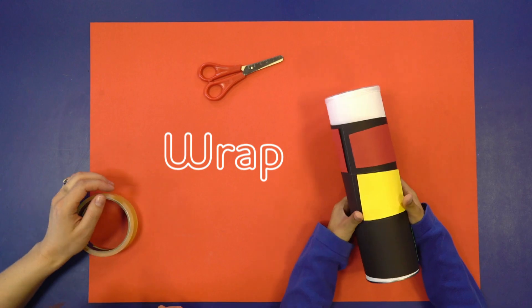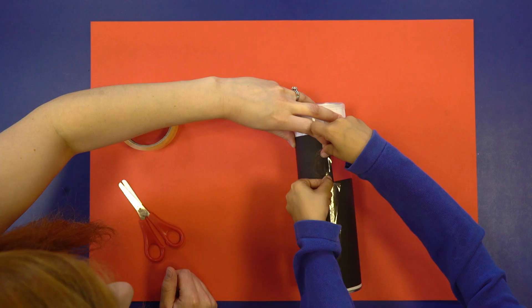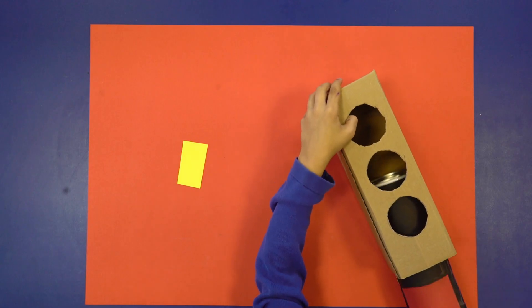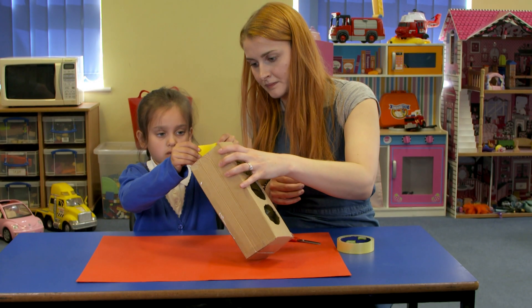Wrap the paper around a long cardboard tube and stick it down with tape. Put the multi-colored tube inside the cardboard box and add a handle to the top.